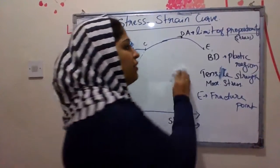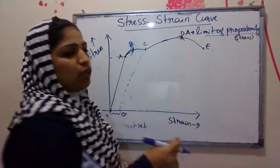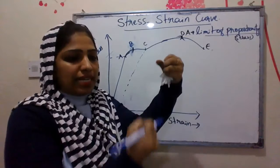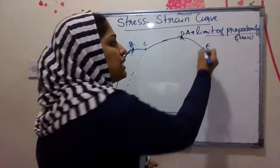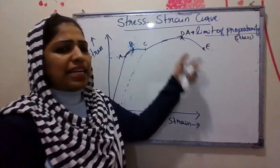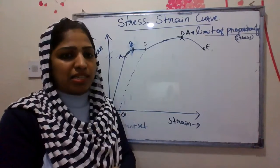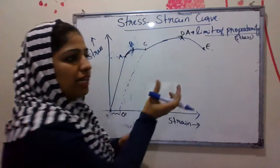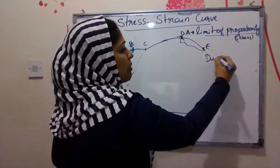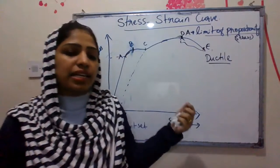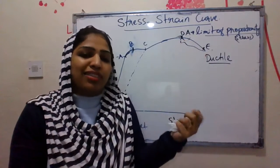We classify materials into two types: ductile materials and brittle materials. If the distance between D and E on the stress-strain curve is large, those materials are called ductile — they can be drawn into thin wires. If D and E are very close together, the material breaks with little elongation and is called brittle.